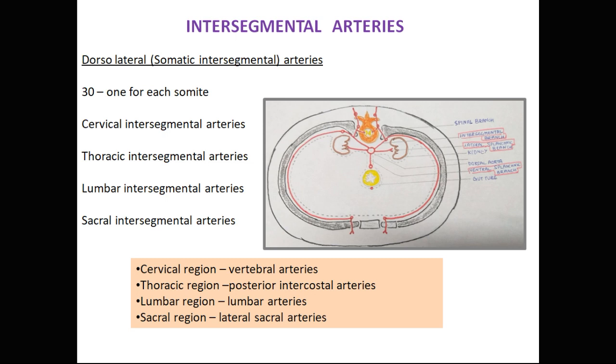The intersegmental arteries are also called the dorsal lateral or somatic intersegmental arteries. They are nearly 30 in number, one for each somite.